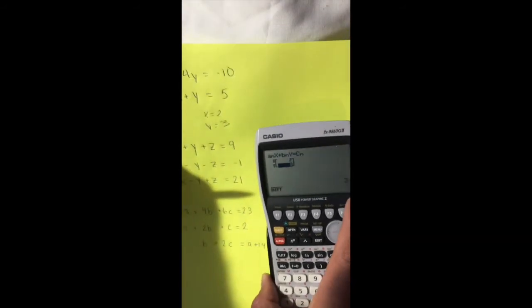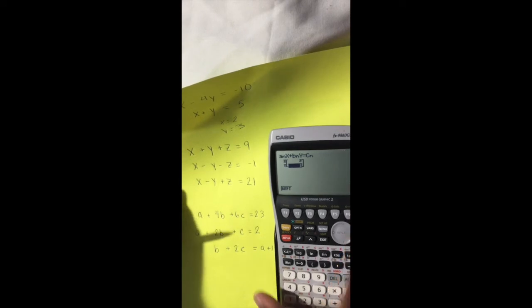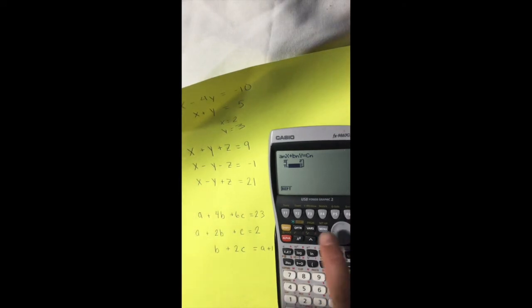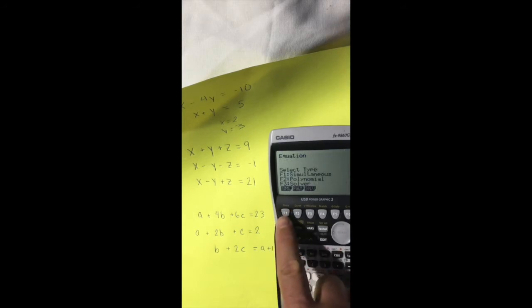Let's take a look at the next equation that we have. Here we have three equations and three unknowns. So we're actually just going to go back to our equation solver again, and this is again in simultaneous.